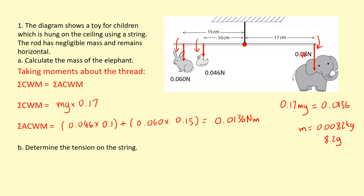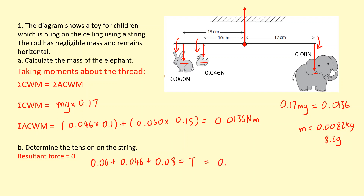Now calculate the tension in the string. There's a force on the string, and since all the other forces — the rabbit, duck, and elephant — are downwards, there must be an upward force on the string so the resultant force equals zero. This is the translational equilibrium part. The upward force must balance the downward forces: 0.06 plus 0.046 plus the elephant's weight of 0.008 must equal the tension, giving tension equal to 0.186 Newtons.